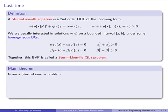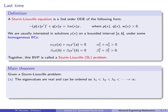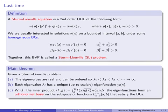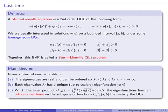Here's the main theorem we learned last time. Given a Sturm-Liouville problem, the eigenvalues are all real, and they can be ordered so they are increasing and diverge off to infinity. Secondly, each eigenvalue lambda_i has a unique, up-to-scalars, eigenfunction Y_i. Finally, with respect to the inner product defined as f dot g equals the integral from a to b of f(x) times the conjugate of g(x) times w(x), the eigenfunctions can be scaled to form an orthonormal basis.